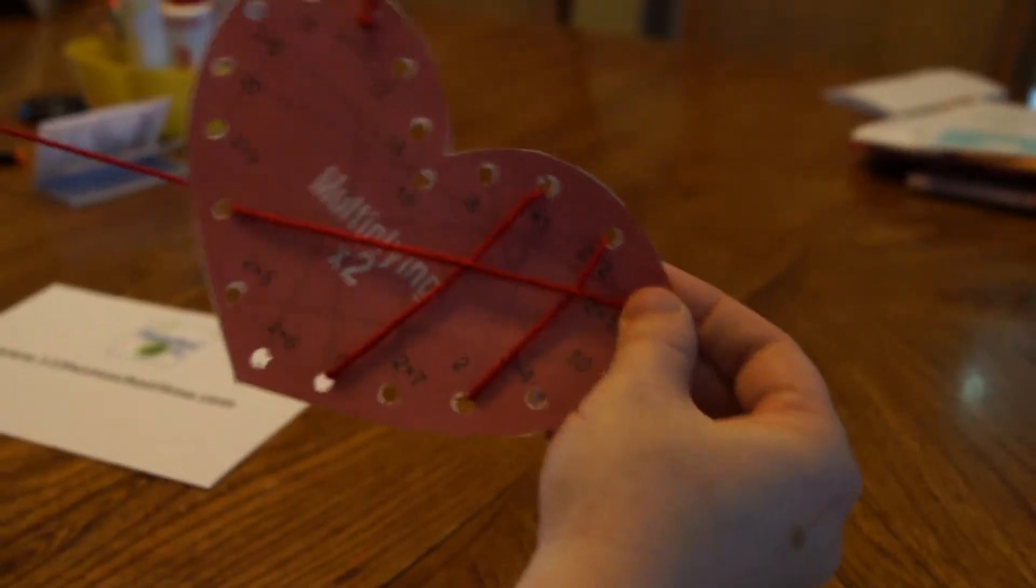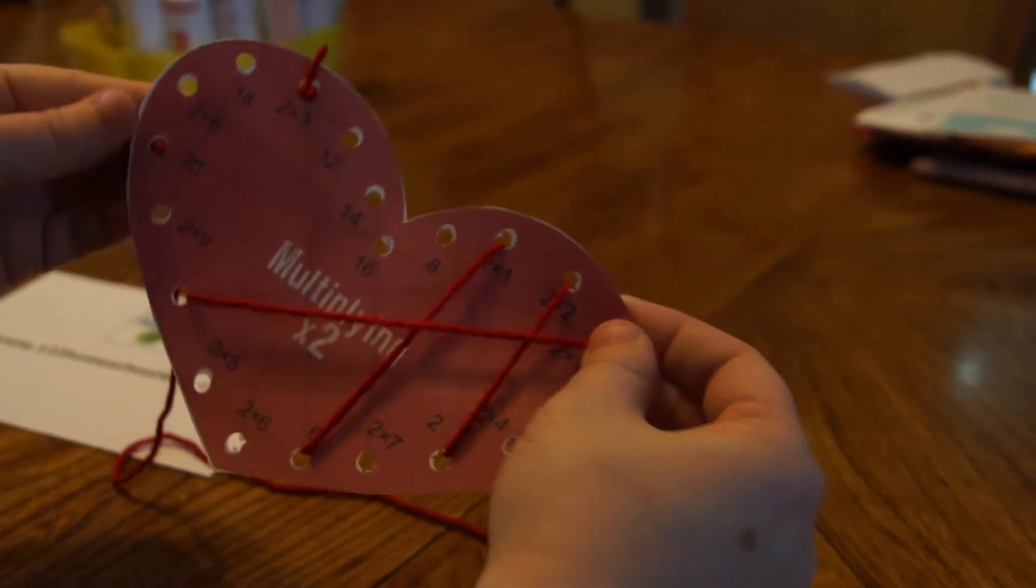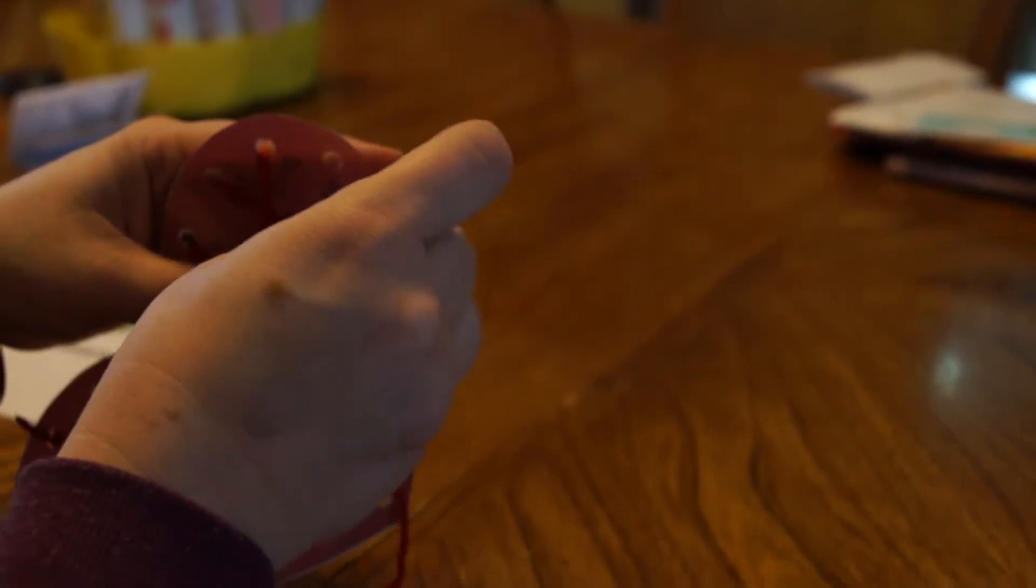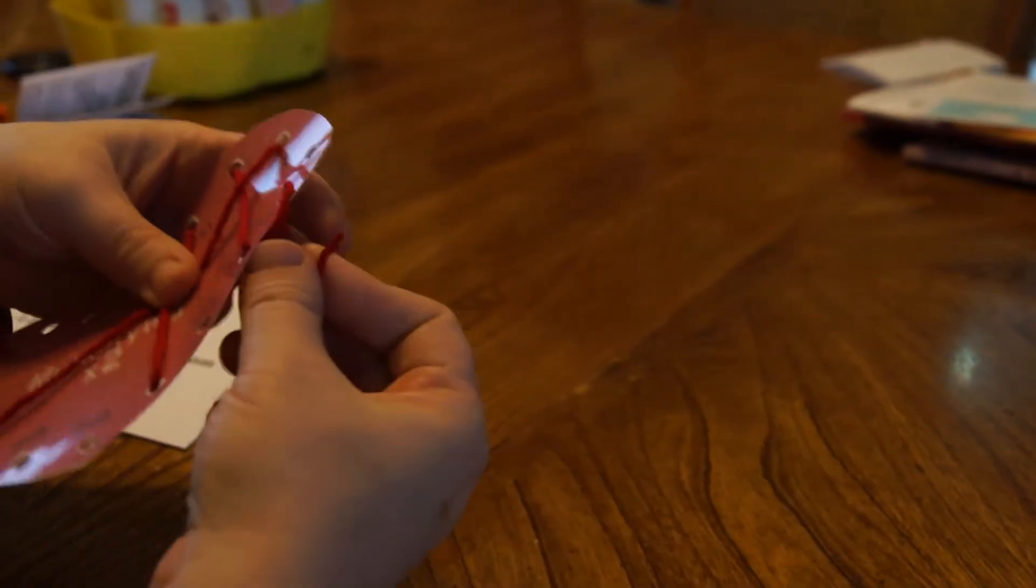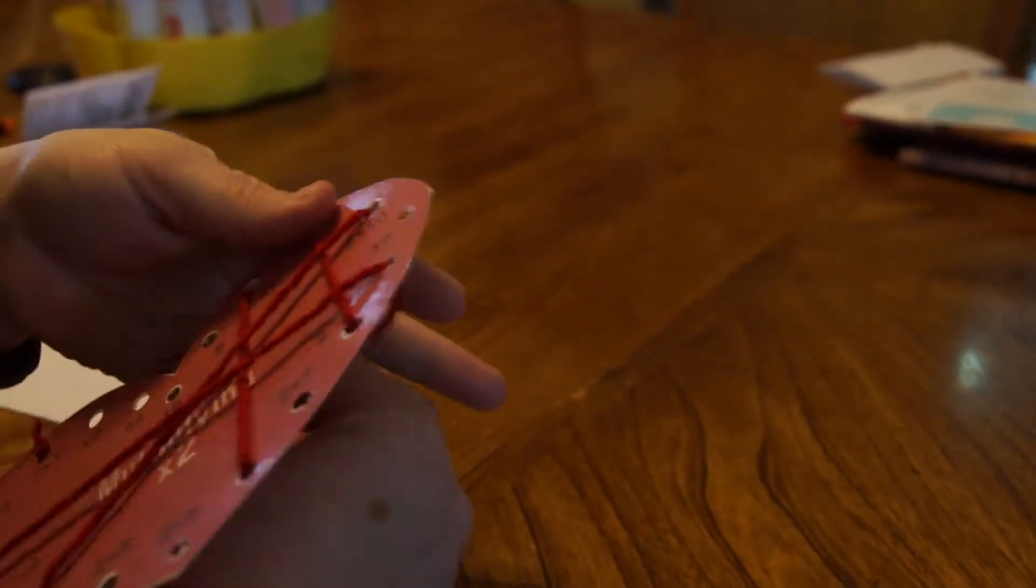2 times 10 is 20, so we go down this spot, we're going to come up the 20 spot. 2 times 4 is 8, so we're going to come up the 8 spot.